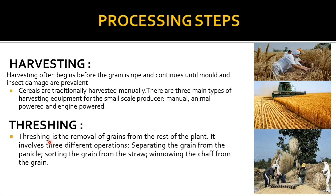Then threshing. Threshing is the removal of grains from the rest of the plant. It involves three different operations: separating the grains from the panicle, then sorting the grain from the straw, then winnowing the chaff from the grain. You can refer to this image to see how threshing looks.